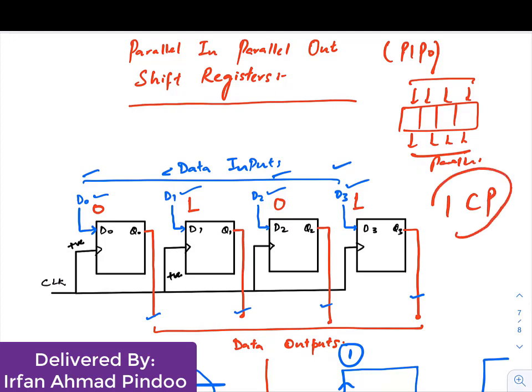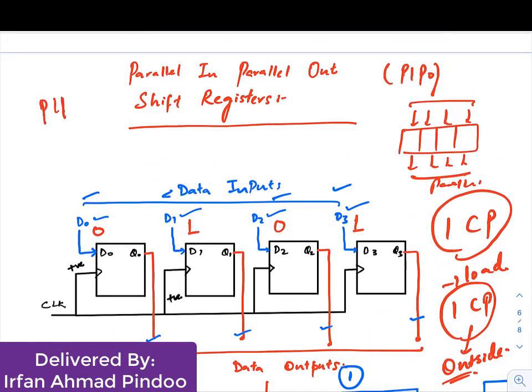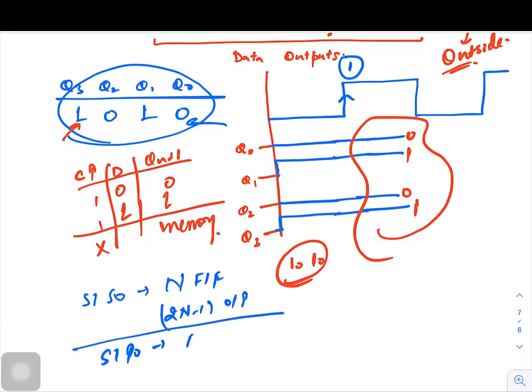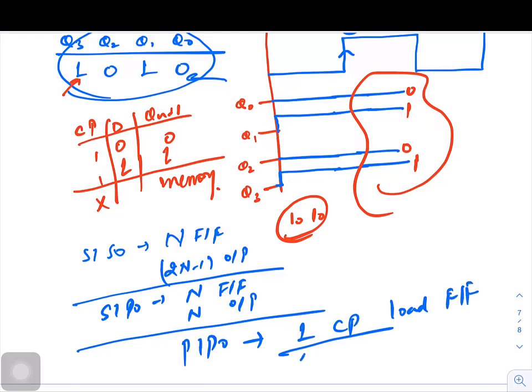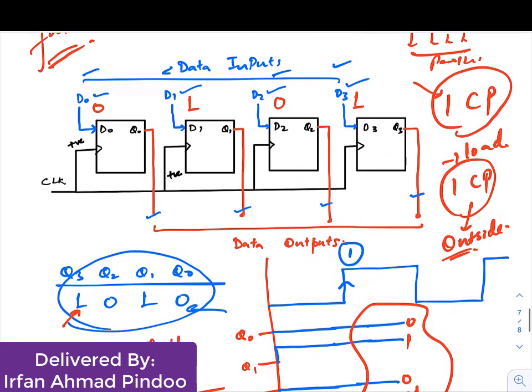It needs only one clock pulse to load the data into the registers and only one clock pulse to move the data to the output. PIPO is the fastest shift register because it requires only one clock pulse. If it is SISO, it needs n clock pulses to store the data and 2n minus 1 clock pulses to get the data at the output. In SIPO we need n clock pulses to store the data and n clock pulses to get the data at the output. PIPO needs only one clock pulse to load the data and one clock pulse to get the data at the output.